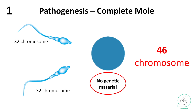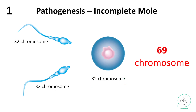On the other hand, the incomplete mole gives an end result of 69 chromosomes. How do they end up with 69? They have a complete ovum that carries its own genetic material — 32 chromosomes — getting fertilized most commonly by two sperms with 32 chromosomes each, or one sperm with 46 chromosomes.